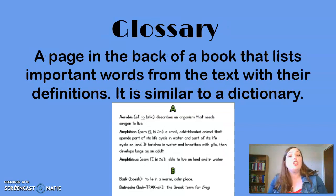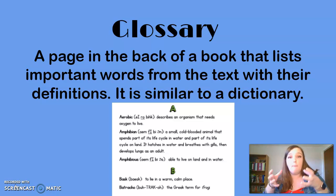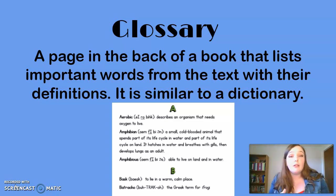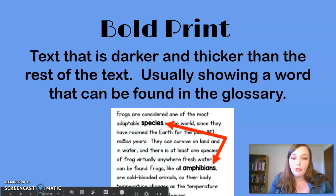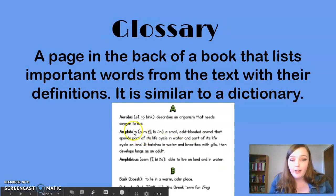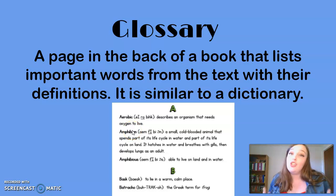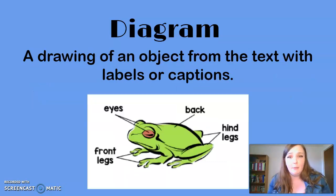A glossary is a page usually found in the back of the book that lists important words from the text with their definitions. It is similar to a dictionary — just like a dictionary lists a word, its definition, how to spell it, and how to use it, that's what a glossary does, except it's specific to the story you're reading. So the glossary in this frog story would be all about frogs. As you can see, the word 'amphibian' is bold, and we can go to the glossary to find that word and its definition — just like a dictionary, but specific to your topic.